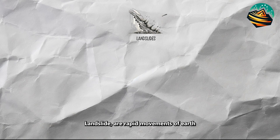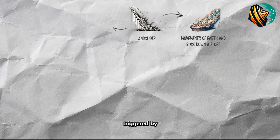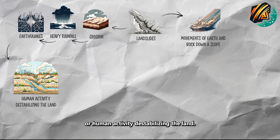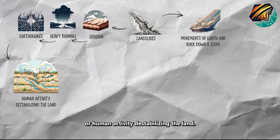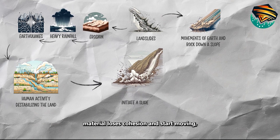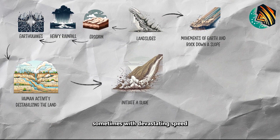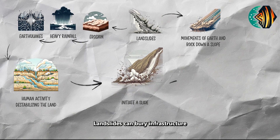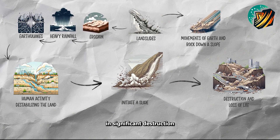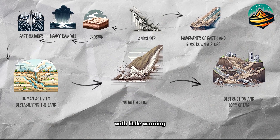Landslides are rapid movements of Earth and rock down a slope, often triggered by erosion, heavy rainfall, earthquakes, or human activity destabilizing the land. These events can initiate a slide when the slope's material loses cohesion and starts moving, sometimes with devastating speed and volume. Landslides can bury infrastructure and homes, resulting in significant destruction and loss of life, often with little warning.